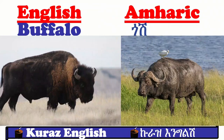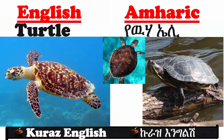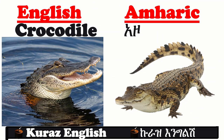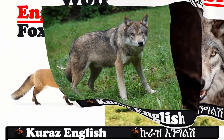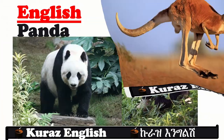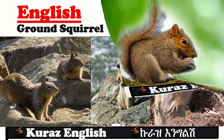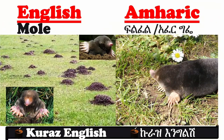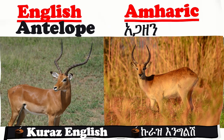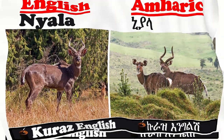Hyena. Buffalo. Porcupine. Tortoise. Turtle. Whale. Shark. Crocodile. Wolf. Fox. Bear. Kangaroo. Panda. Koala. Squirrel. Ground Squirrel. Mole. Rabbit. Dik-dik. Antelope. Deer. Bushbuck. Nyala. Walya.